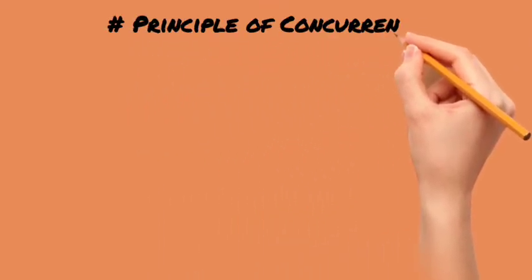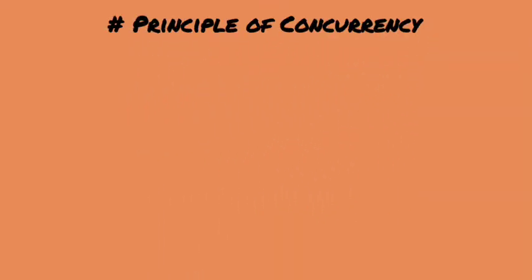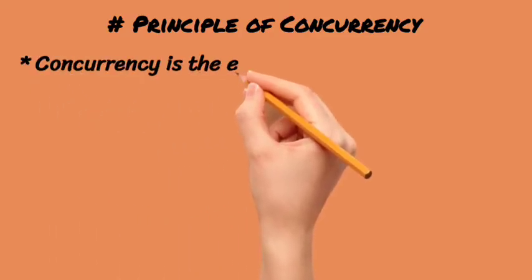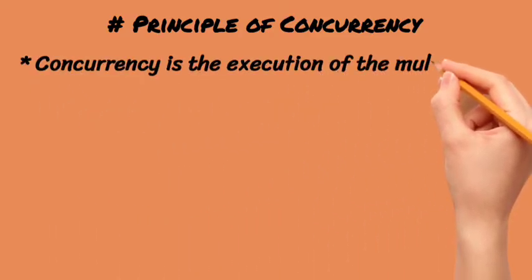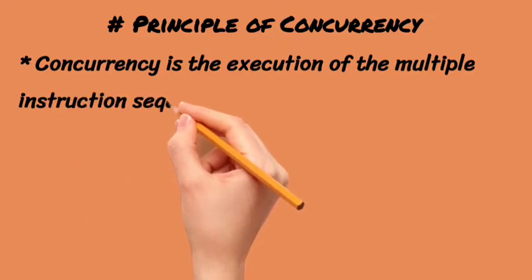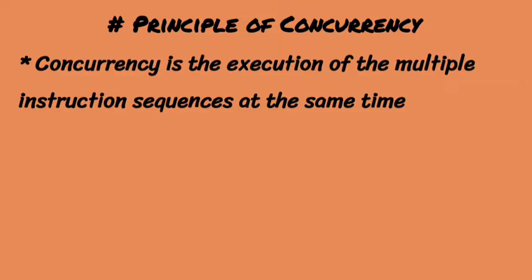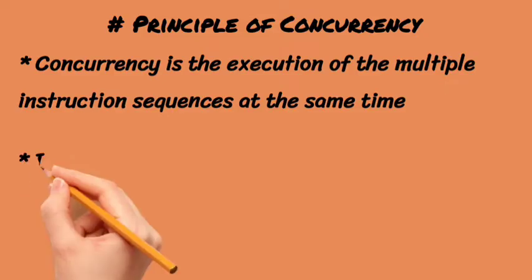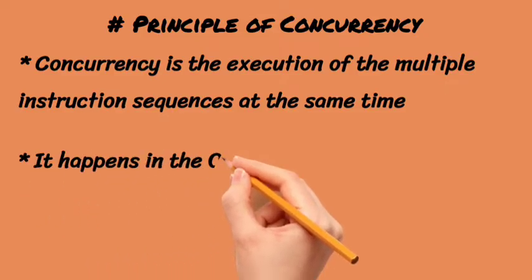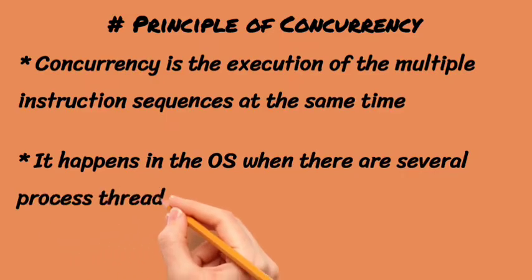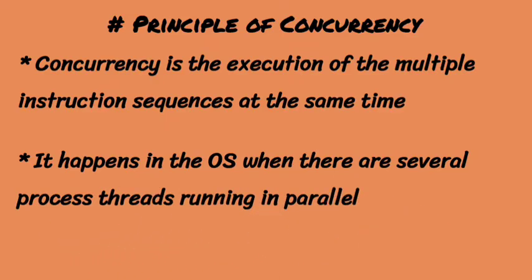First, let's start with the principles of concurrency. What is the principle of concurrency? Concurrency means when many instructions are executed at the same time but in sequence. So what do we call concurrency? What happens when concurrency occurs? When many processes are running in parallel in any operating system.